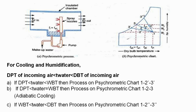The condition is that the DPT of incoming air should be less than the temperature of water, and the temperature of water should be less than the dry bulb temperature of the incoming air. If DPT < T_water < WBT, then the process that occurs follows the first line.